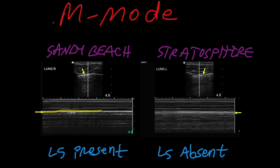If we look at the pleural line — here outlined in yellow — and look above and below it: on the normal side, there's a significant difference between above and below; above is static while below is dynamic, appearing sandy and fuzzy. On the pneumothorax side, we look above and below and they're both static, other than chest wall movement.